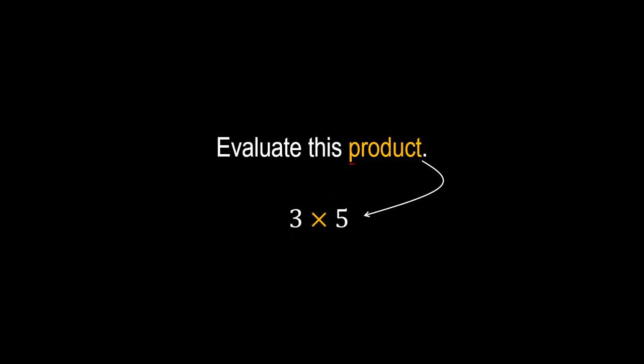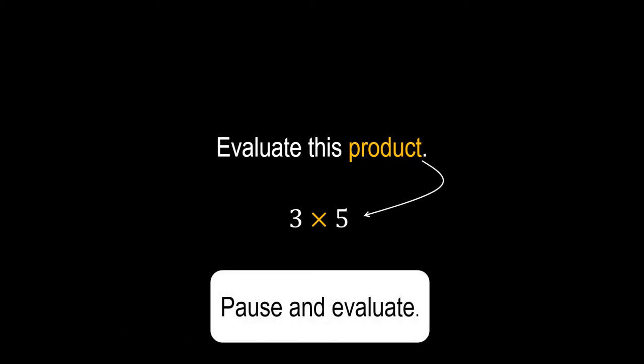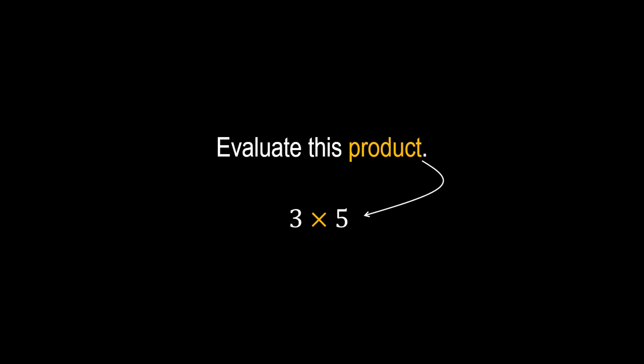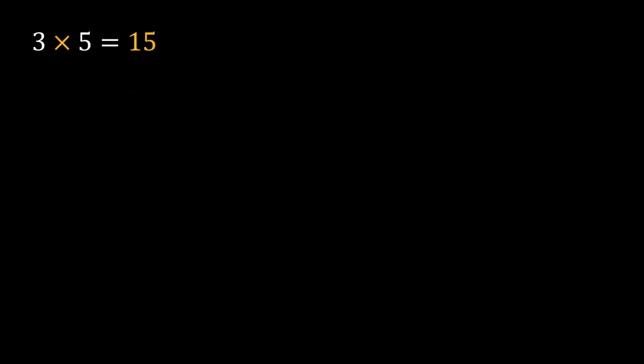And by the way, product is the word for what we get when we multiply numbers together. 3 times 5 equals 15. We can think of 3 times 5 as adding up 3 groups of 5 together, because multiplication of whole numbers is like repeated addition.